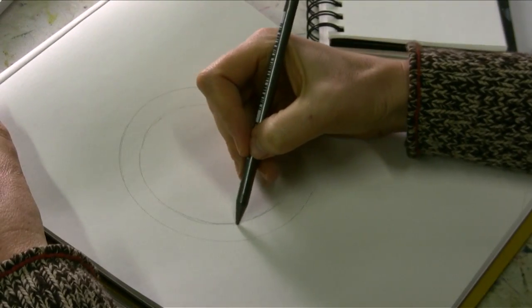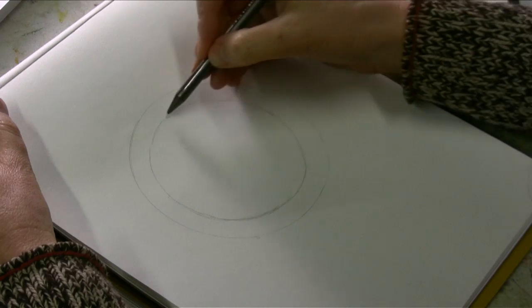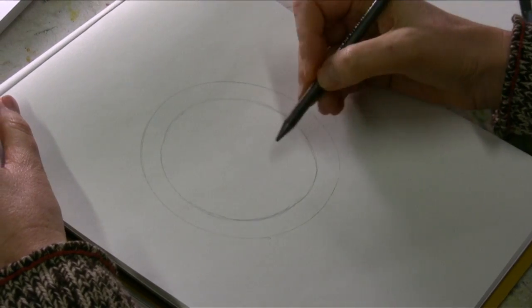I started by making circles. You can make that with a compass or outline or do it freehand depending on how perfect you want to be.